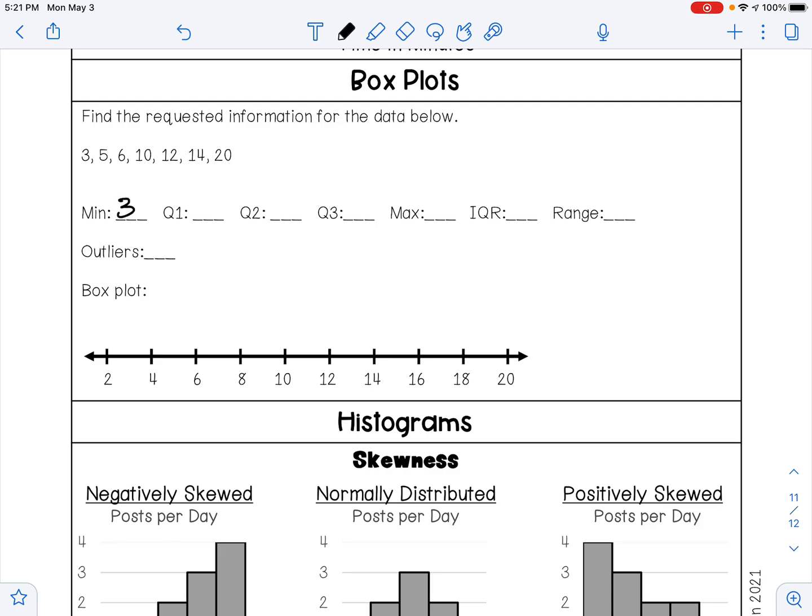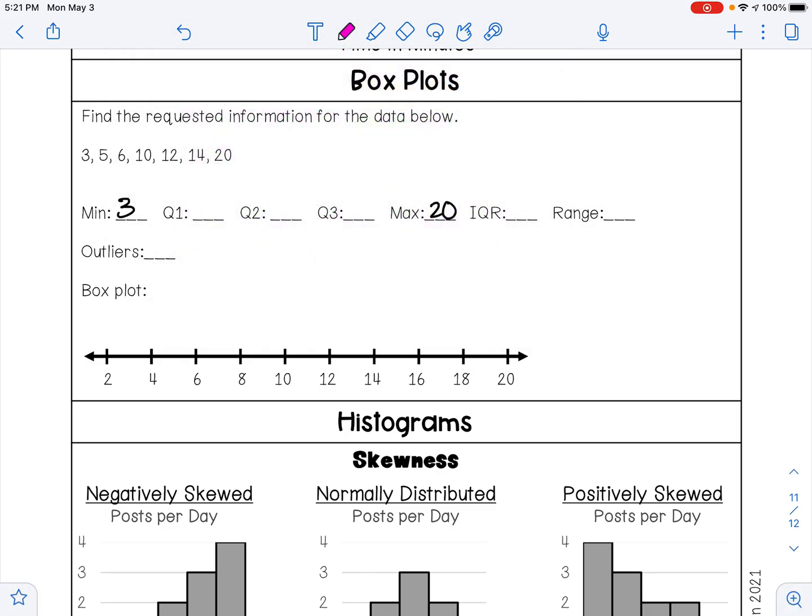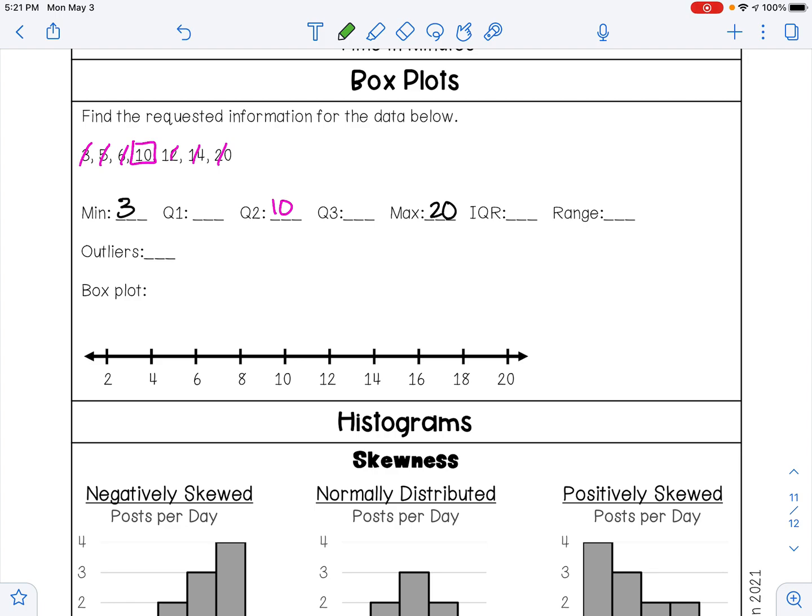So my minimum value is three and my maximum value is twenty. My median Q2, well I'm just going to cross off until I get to the middle, and so my middle value is ten, so my median is ten. And then Q1 is the middle of my first half, so that's going to be five.